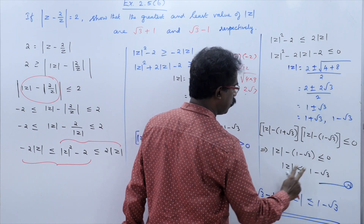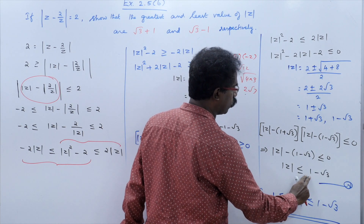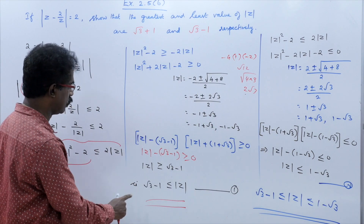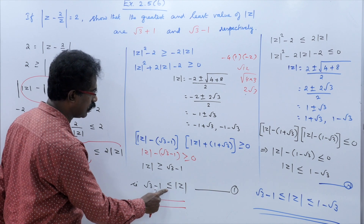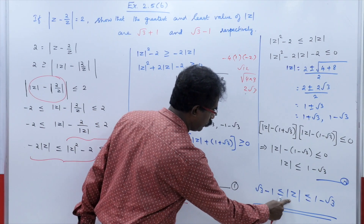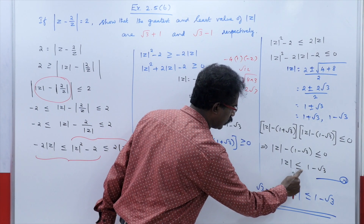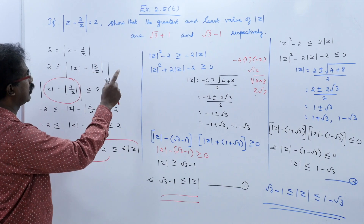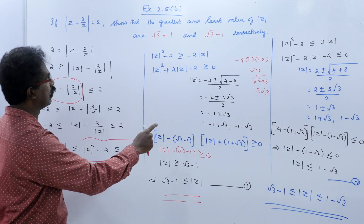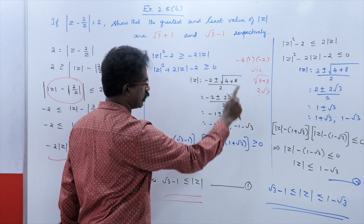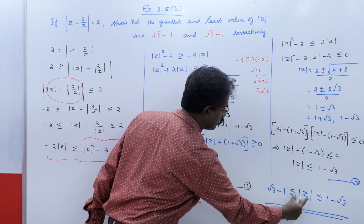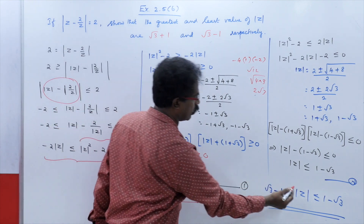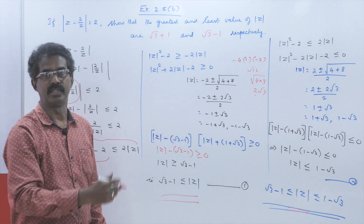So modulus z minus (1 plus root 3) is negative, less than 0. Taking this term to the right side: modulus z is less than or equal to 1 plus root 3, which equals root 3 plus 1. This is Result 2. Combining both results: root 3 minus 1 less than or equal to modulus z less than or equal to root 3 plus 1. This is exactly what was asked to prove — the least value of modulus z is root 3 minus 1 and the greatest value is root 3 plus 1. So this completes the proof.